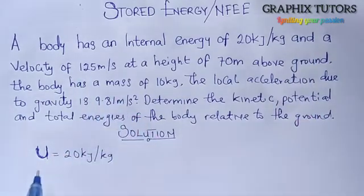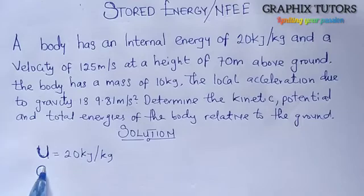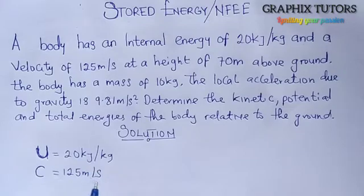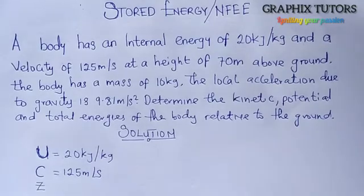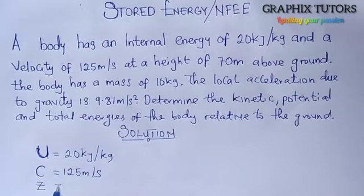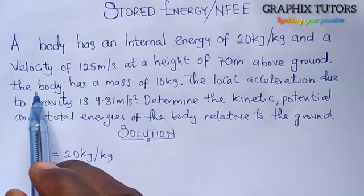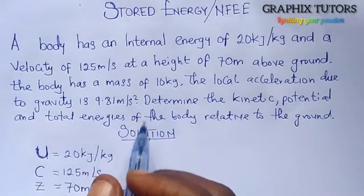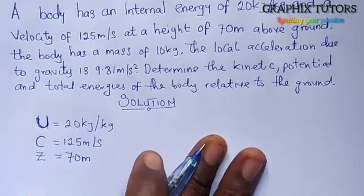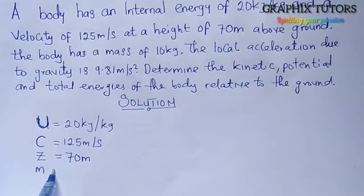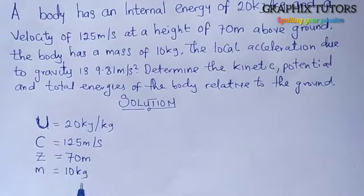For velocity, we use C so we don't mistake it with volume. It is given as 125 meters per second. For height, the datum, we use Z — we don't use H here because H is used for enthalpy. So Z is our height, and that gives us 70 meters above the ground. The mass is 10 kilograms.